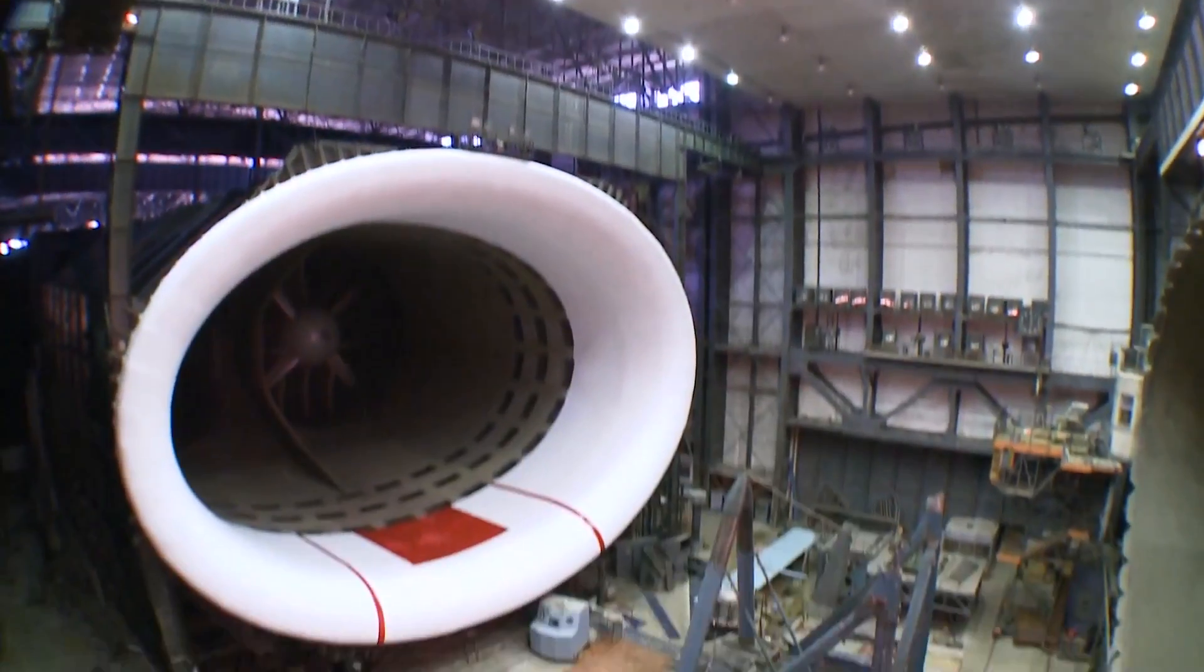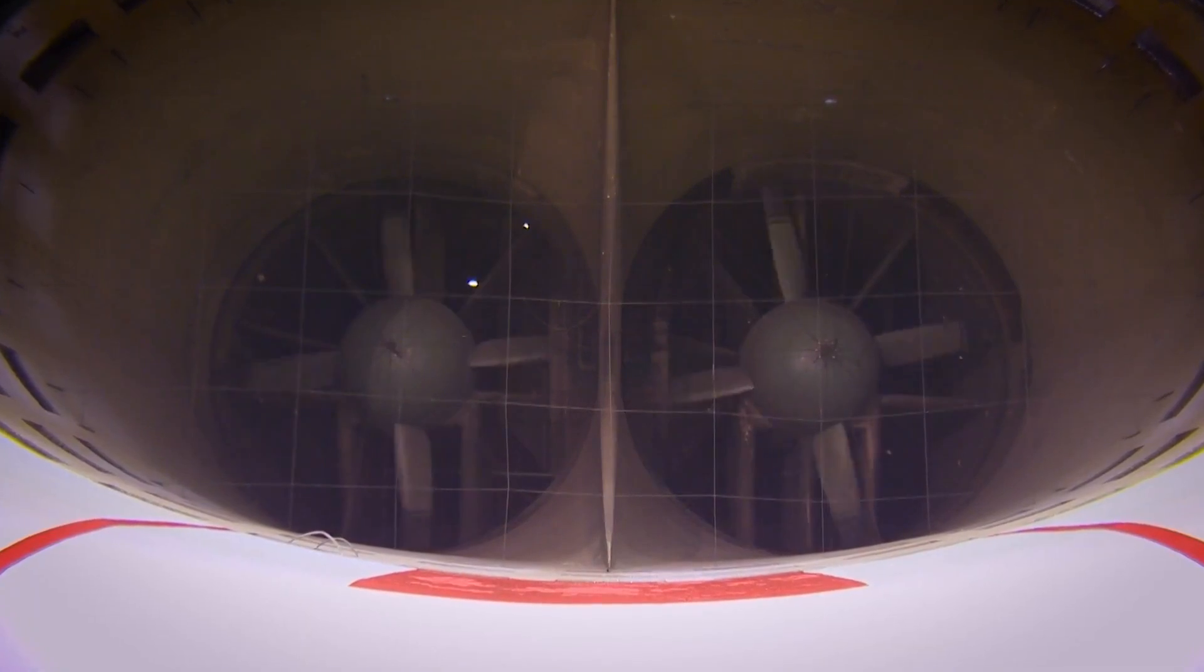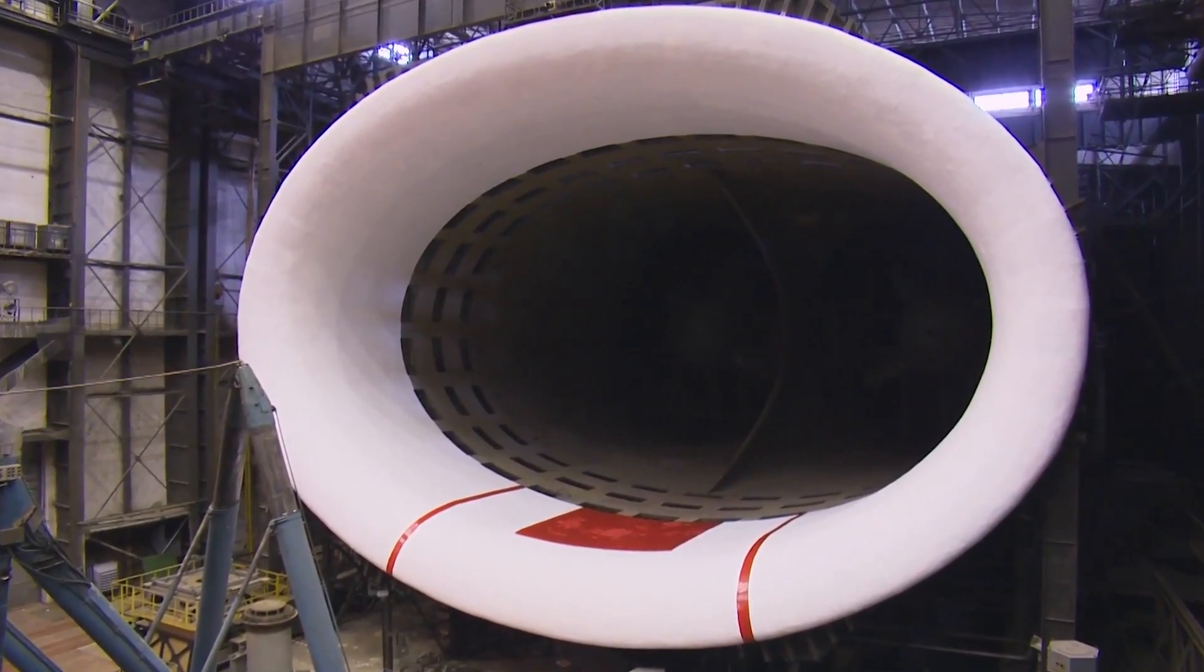The T-101 Vertical Wind Tunnel is one of the largest in the world. Its width is 78 feet and the engine power here is 30 megawatts. You can tap out a whole life-sized fighter plane in here.